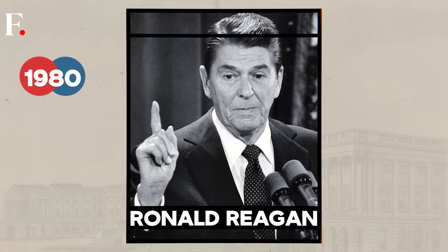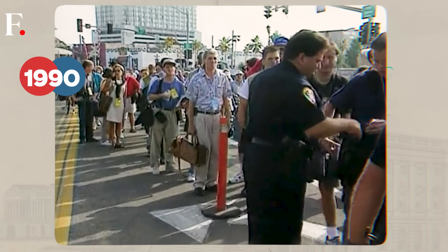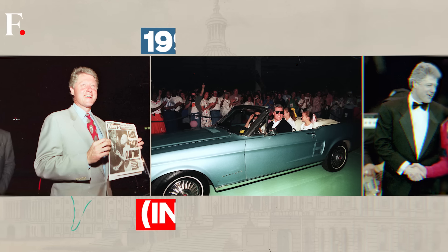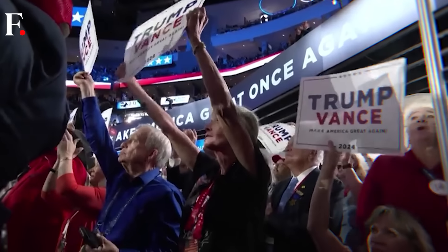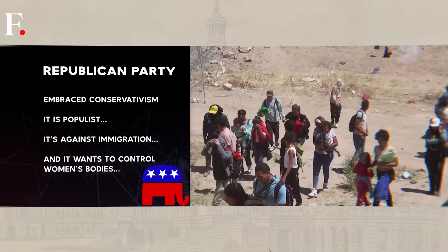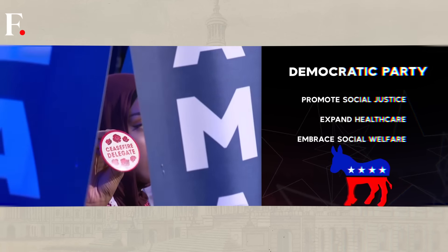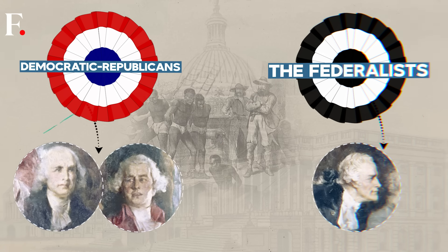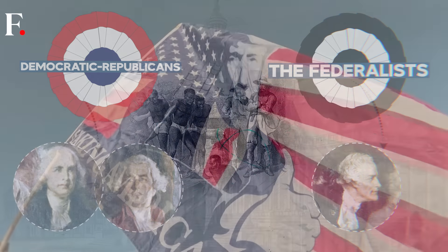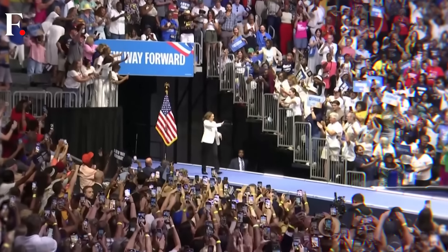In the 1980s, Ronald Reagan embraced a conservative agenda. Meanwhile, in the 1990s, Democrats moved to a more centrist position, especially under Bill Clinton. The differences between the two parties today are stark. The Republican Party has embraced conservatism — it is populist, against immigration, and seeks to control women's bodies. The Democrats want to promote social justice, expand healthcare, and embrace social welfare. History shows how far the two parties have come: a party founded to abolish slavery is now a pro-business party — the Republicans — while the Democrats, who started by catering to the Southern states, now hardly win there.